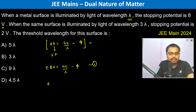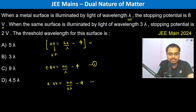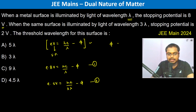The second equation is: e into 2 volts equals hc by 3 lambda minus phi. Now what is being asked is the threshold wavelength for this surface, so we have to find phi and equate it to hc by lambda naught.